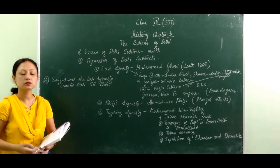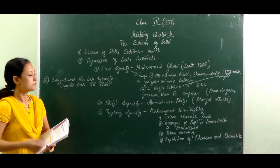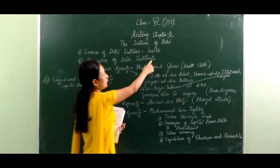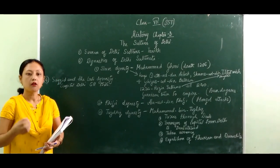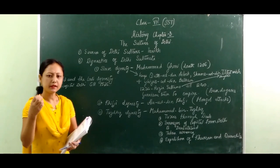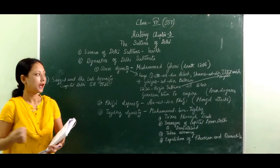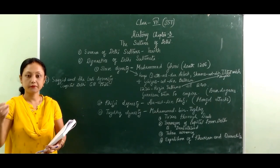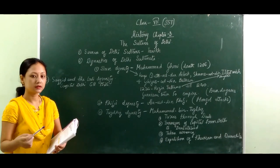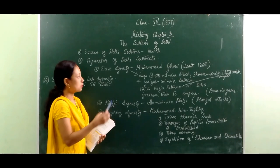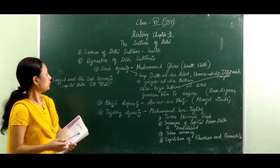Sources means through which we acquire information. First of all, there are the tarix. These tarix are the writings found in monuments, coins, or temples. We come across many temples where we find writings, and we find coins that indicate different time periods. From there we come to know about the rules of different kings, and that source is known as tarix.